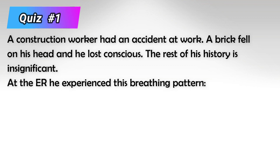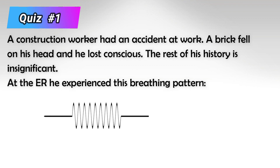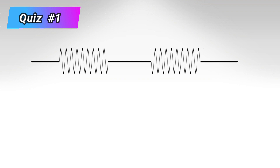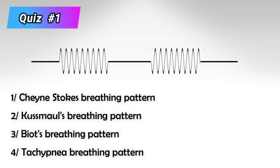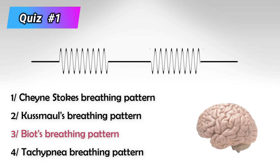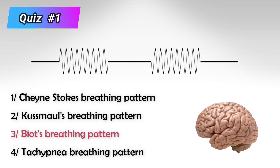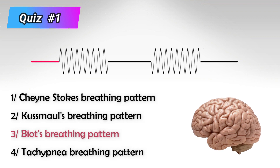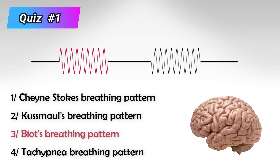And here is how the patient was breathing. Which of the following is the breathing pattern the patient is displaying? The patient has a brain injury, and we know that brain injury is associated with Biot's breathing pattern. Indeed, the patient is displaying Biot's breathing pattern. As you can see, there is a period of apnea followed by rapid breathing and followed by another period of apnea.